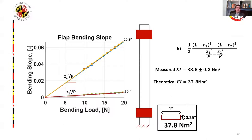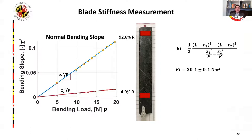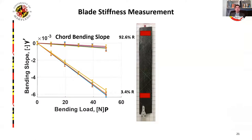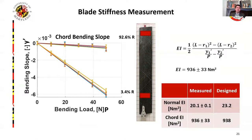With this method validated, we moved on to measuring the straight untwisted blade for the structural baseline. We see the same overlay of trials and small 95% confidence intervals as with the previous validation case. Using the slopes of the two measurements, we calculate the EI in the normal bending direction to be 20.1 Nm², up to a very high accuracy. We can do the same thing for the chordwise direction. There is a bit more scatter in each trial because the blade is nearly 10 times stiffer in the chordwise direction and so noise plays a larger role. Despite this, we still measure the EI to be quite close to the design value, and the measured properties don't deviate from what the blade was designed to be.